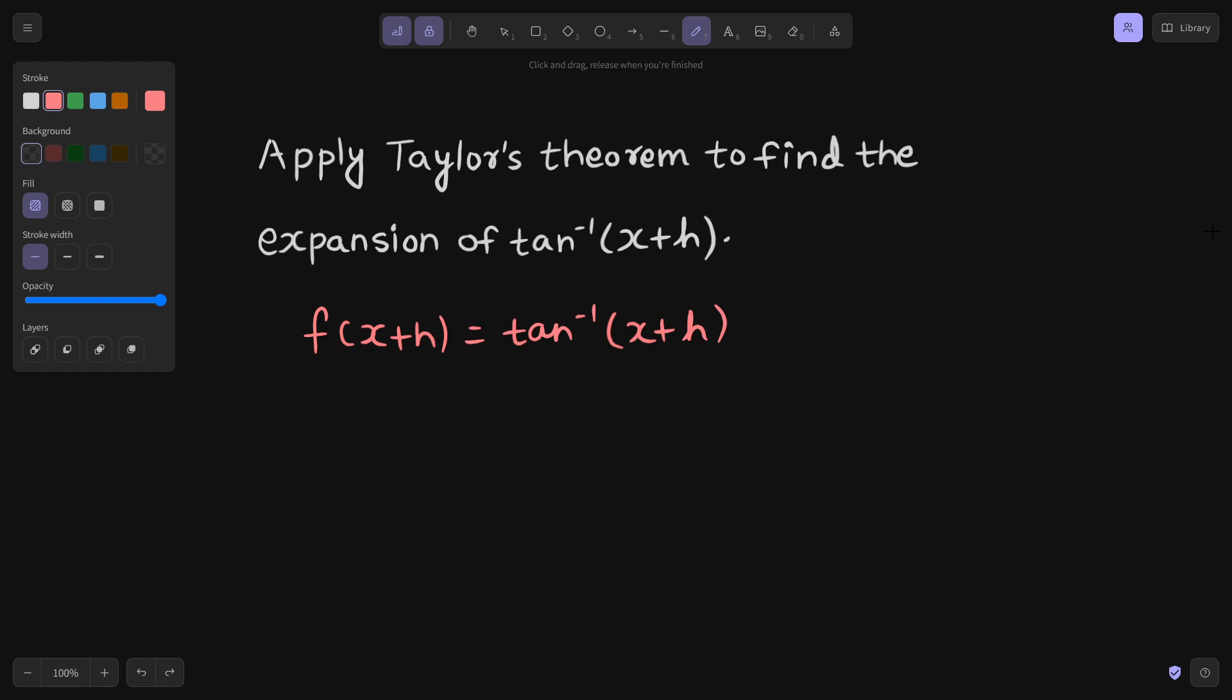In the next step, we put h equals 0 so that we can get f(x). So if we put h equals 0, we will get f(x) as tan inverse x.